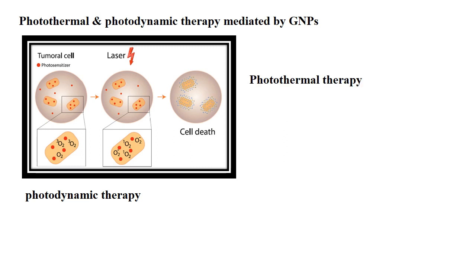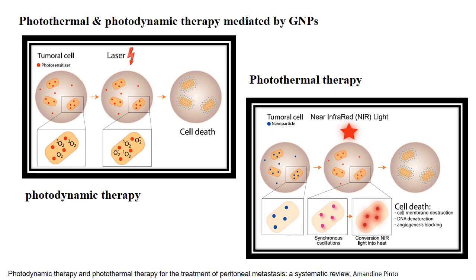For photothermal therapy, the photothermal agent accumulates at the tumor site and converts NIR light energy into heat, producing cell death. Two important factors in photothermal therapy are the extinction coefficient and the photothermal conversion efficiency, which determine the performance of the photothermal agent. Gold nanorods in particular have good photothermal efficiency of 21%, which is why they are used in photothermal therapy.